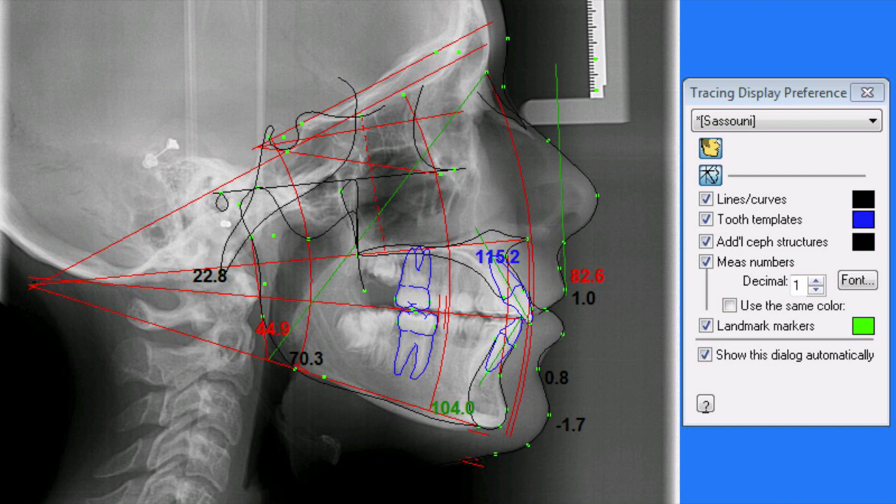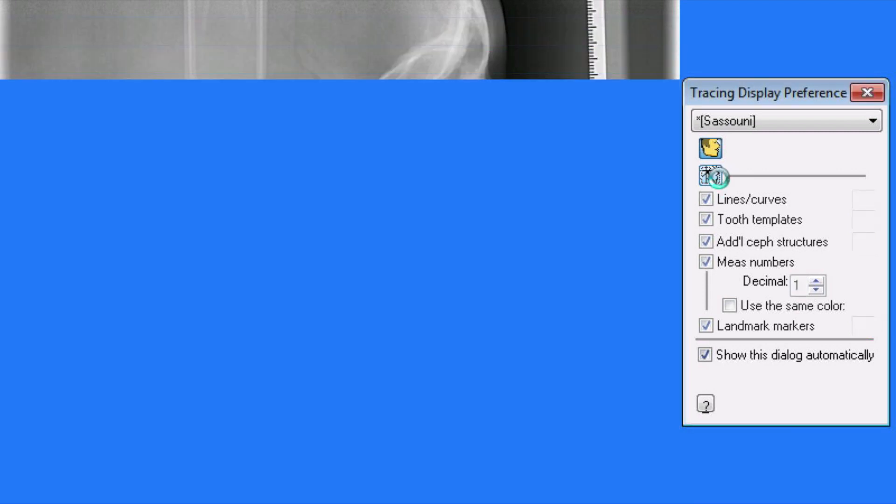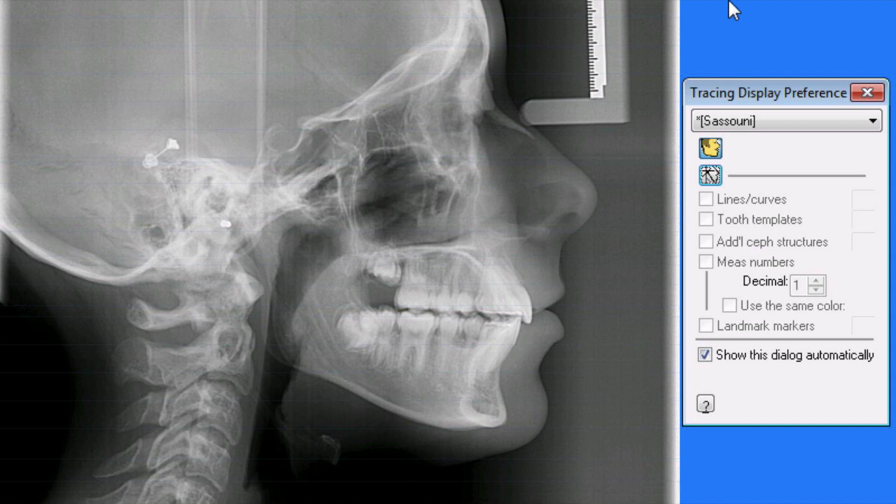The first thing that you want to do is import your cephalometric x-ray, which is going to look like this. And it's very important that you have a ruler on your staff so you can calibrate the image.